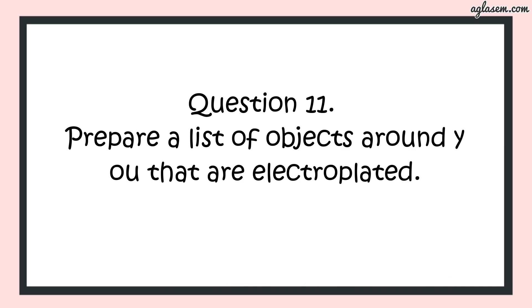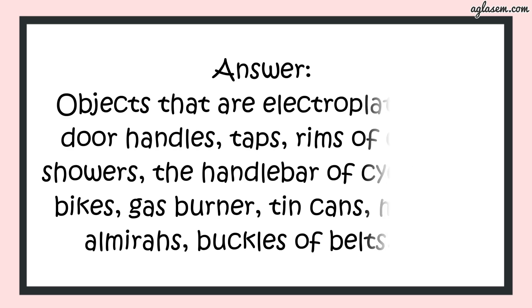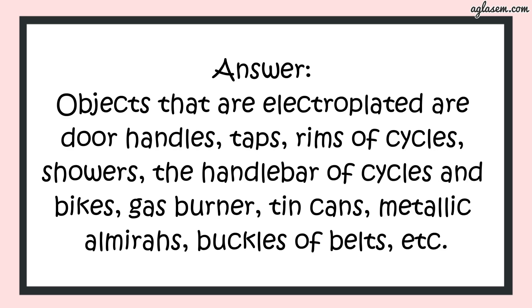Question number 11 says: prepare a list of objects around you that are electroplated. The answer is: objects that are electroplated are: door handles, tapes, rims of cycles, showers, the handlebar of cycles and bikes, gas burners, tin cans, metallic almirahs, buckles of belts, etc.